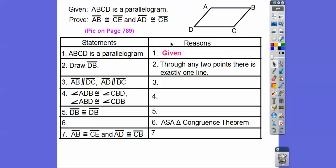This step says draw segment DB, so we draw that diagonal. The reason is: through any two points there's exactly one line. Next, AB is parallel to DC — the top is parallel to the bottom — and AD is parallel to BC. That's just the definition of a parallelogram. Notice how we mark them with arrows to tell our brain these are parallel lines. With parallel lines cut by a transversal, we can use alternate interior angles.